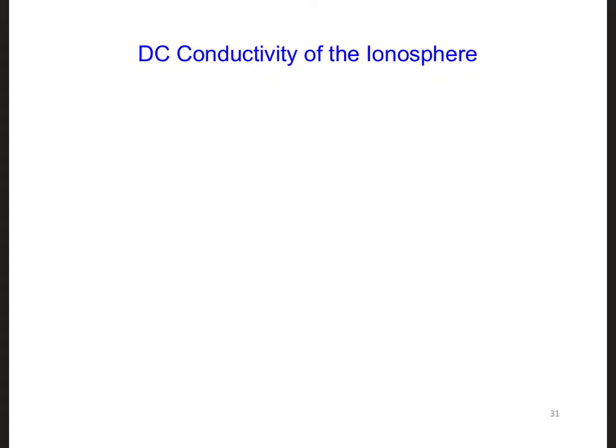For simplicity, let's start by considering the DC conductivity of the ionosphere. Luckily, this is reasonably accurate at VLF frequencies. The DC conductivity is only determined by the resistance of the ionosphere. In this case, we're going to have sigma of the ionosphere equal to the electron density times the electron charge, and that will be squared.